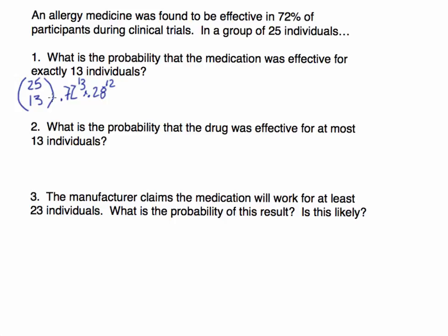So what we're going to do instead is write out all the essential pieces of information and then put those into StatCrunch to have it calculated for us. When working with a binomial distribution and calculating probabilities, we need N, P, and Q.